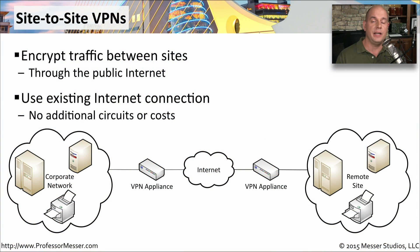A site-to-site VPN is generally used when you have an organization with a remote location, or maybe these are two separate organizations that would like to communicate with each other, but they would like to communicate over an existing internet connection. Communications through the internet is something that is insecure.